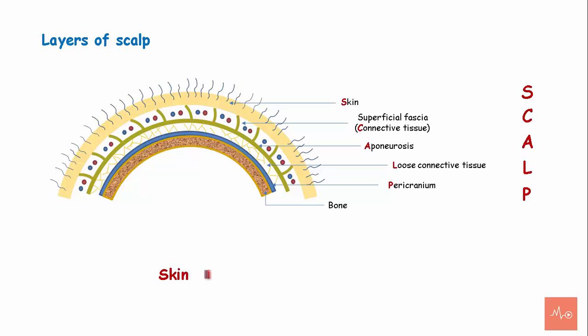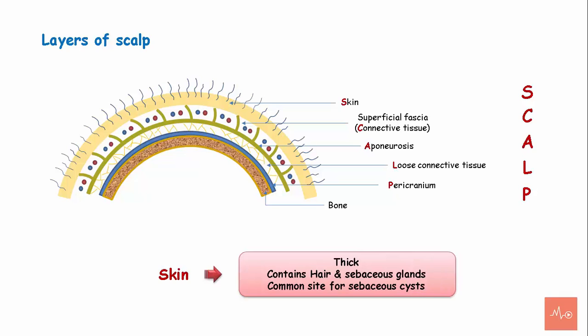Skin is the thick and outermost layer. It contains hair and sebaceous glands. The scalp is the most common site for sebaceous cyst formation.